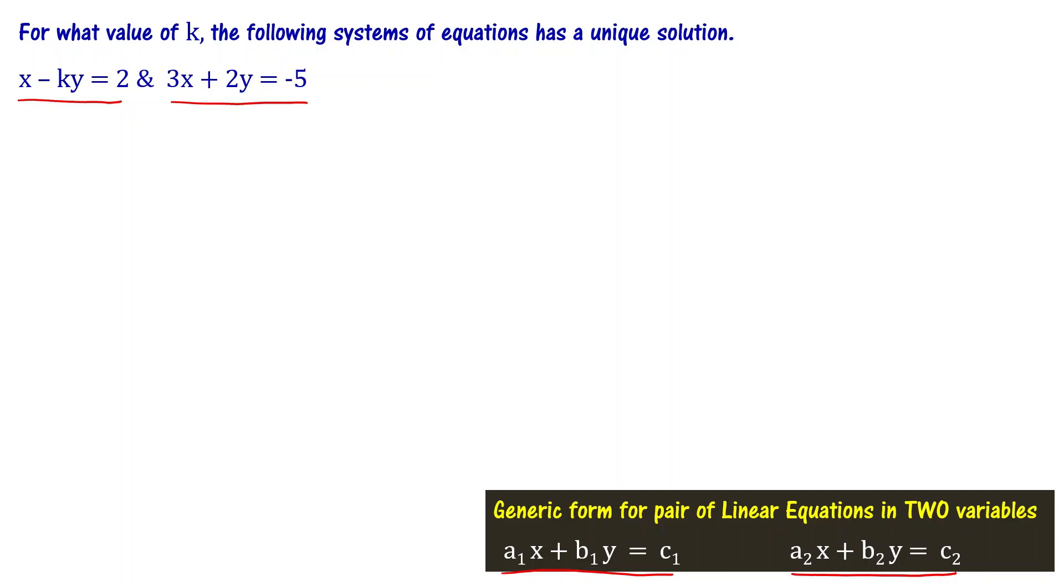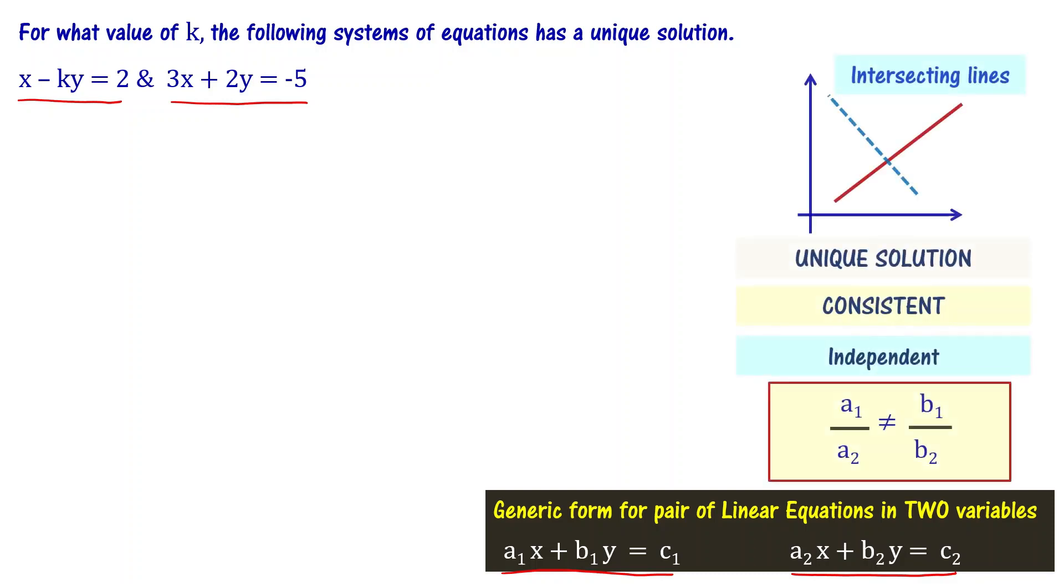For a unique solution, the relation must be: a1 by a2 is not equal to b1 by b2. When a1 by a2 is not equal to b1 by b2, the equations will have a unique solution and the graph will show intersecting lines. These equations are called consistent equations and an independent set of equations. Please note all these points.